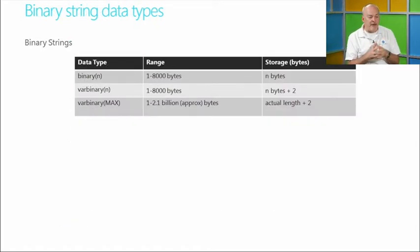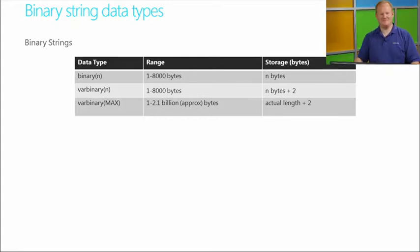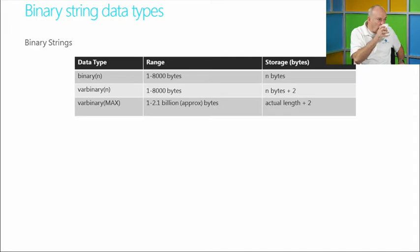Under binary strings, we have Binary(n) at 1 to 8,000 bytes, VarBinary at 1 to 8,000 bytes plus two for storage, and VarBinary(max) at approximately 1 to 2.1 billion bytes plus two bytes for storage. Storage can vary depending on how binary large objects are stored — if you exceed a certain limit, the data structure changes and there's more storage impact.